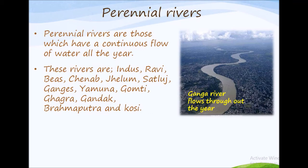Perennial rivers include the Indus, Ravi, Beas, Chenab, Jhelum, Sutlej, Ganga, Yamuna, Gomti, etc.